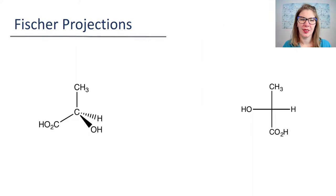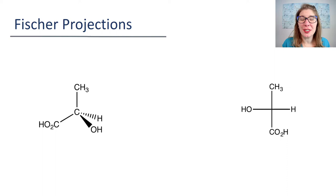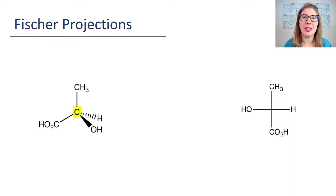Welcome back students. In this video let's talk about Fischer projections. Fischer projections are a way to draw compounds that was supposed to be easier but we really struggle with. I remember being a student and probably not understanding these at all, so let's try and make it easier for you. The first thing drawn here on the left is a plain old representation of a carbon that is sp3 hybridized with four different groups attached — so a chiral carbon.